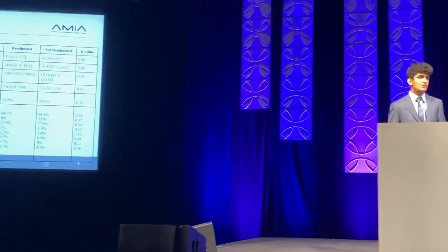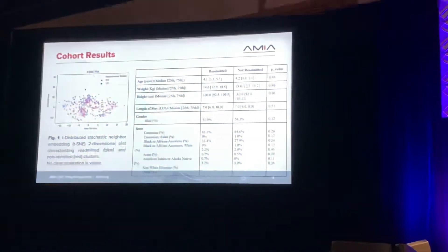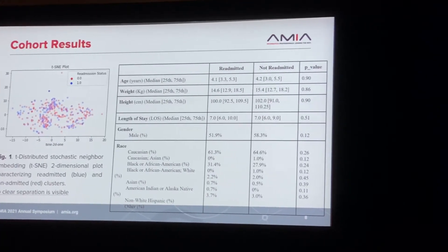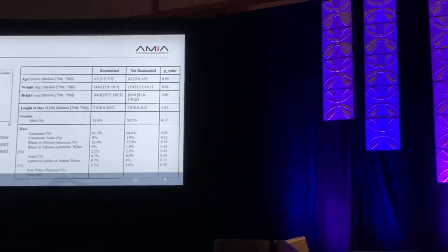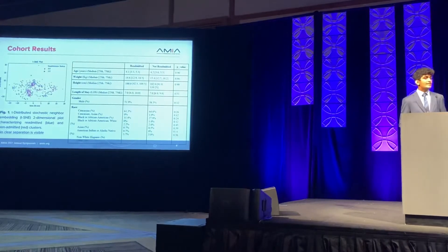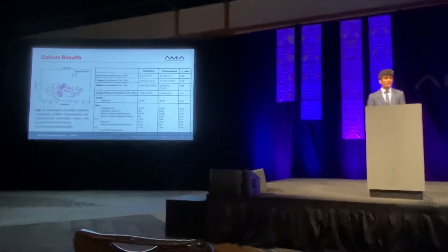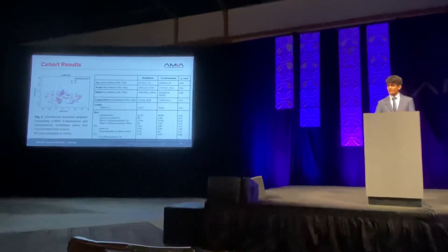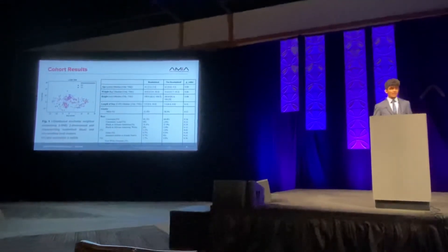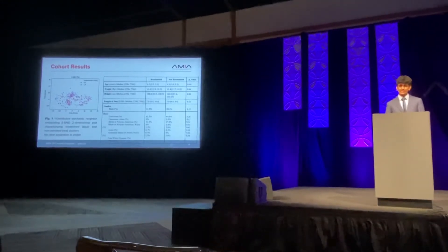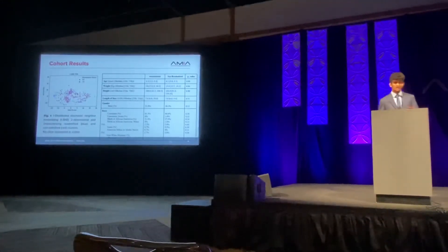Here are the results on the cohort. On the left you can see the t-SNE 2D plot, which characterizes the readmitted and non-readmitted clusters in blue and red respectively. This basically shows there's no clear separation in the clusters — I tried UMAP, t-SNE, and PLS, and none showed clear separation. The table on the right shows median age, weight, height, length of stay, gender, and race distributions for both groups. Using rank-sum and chi-square statistical tests to generate p-values, there are no statistically significant differences between the clusters for these variables.